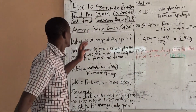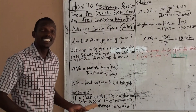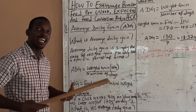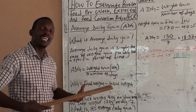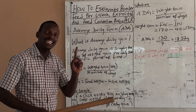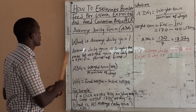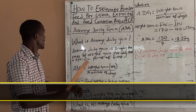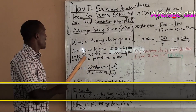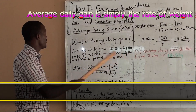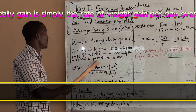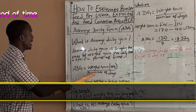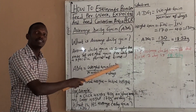The first parameter is what we call Average Daily Gain. The average daily gain is how much weight a broiler will gain on a daily basis — specifically, the rate of weight gain per day over a certain period of time. It is simply calculated as weight gain divided by the number of days.